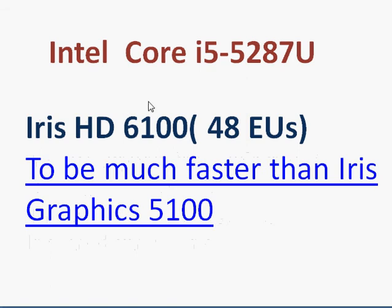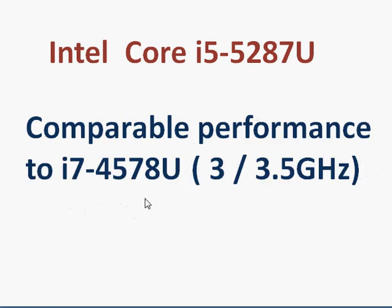The i5-5287U also comes with much improved graphics in the form of Iris HD 6100, which has 48 execution units and is expected to be much faster than the Iris Graphics 5100 in Haswell. If you compare it with the Haswell i7, which has a 3 GHz base and 3.5 GHz turbo clock, you should see comparable CPU performance and much better graphics performance.